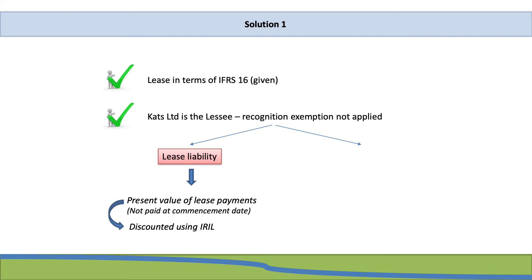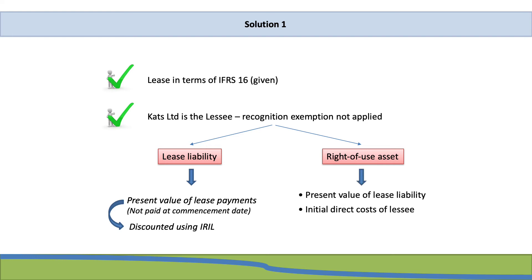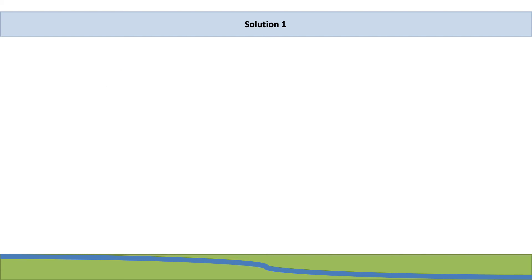The lease liability will be the present value of the lease payments discounted using the interest rate implicit in the lease. We also need to recognize a right-of-use asset, with the starting point being the present value of the lease liability, to which we add initial direct costs of the lessee, any lease payments paid on or before commencement date, as well as an estimate of dismantling costs.